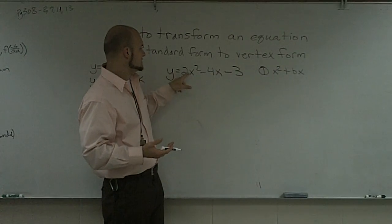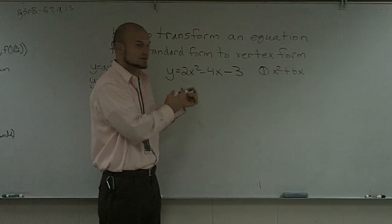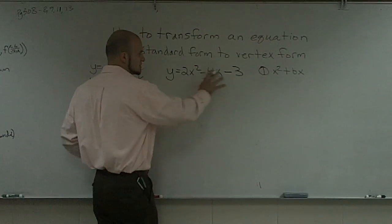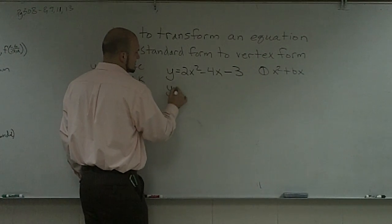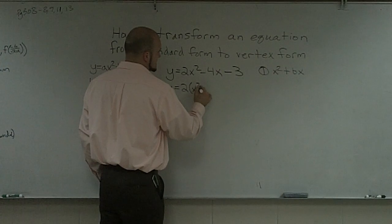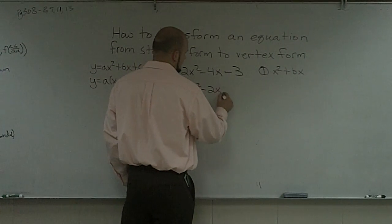I'm going to have to factor that 2 out of at least my x squared and my x term. Now I'll leave it like this, I'll give another example in a little bit. So if I was going to factor out my 2, I'd have y equals 2 times (x squared minus 2x).